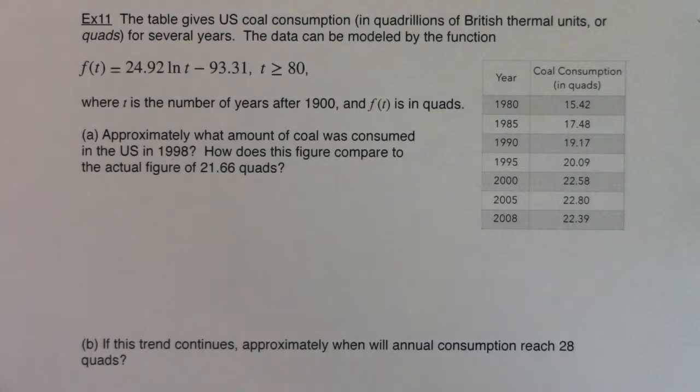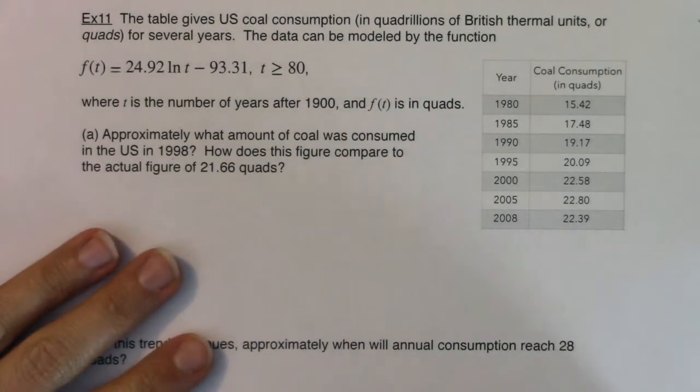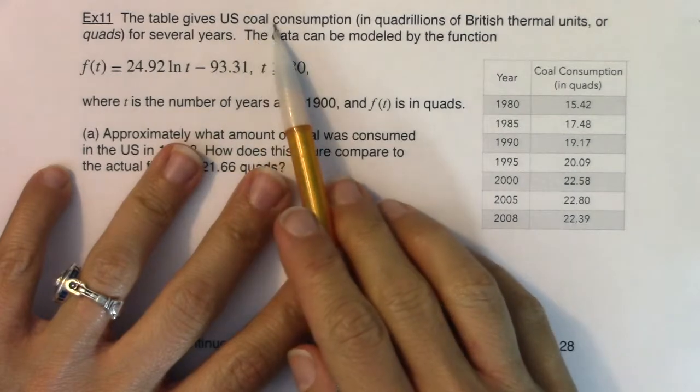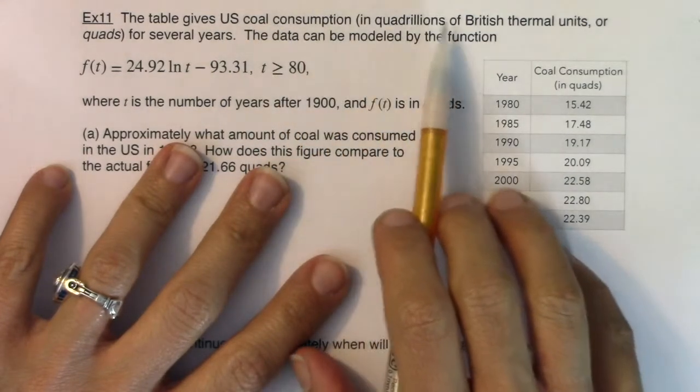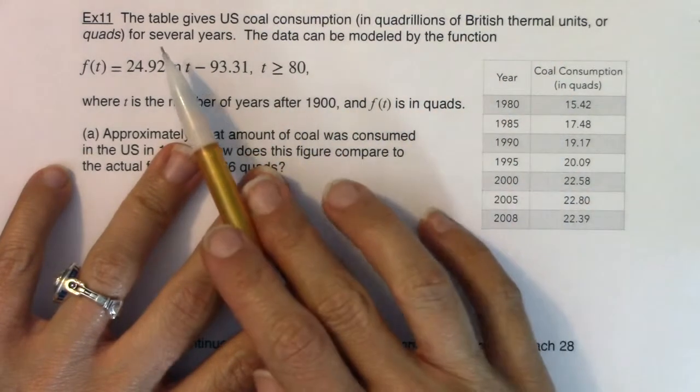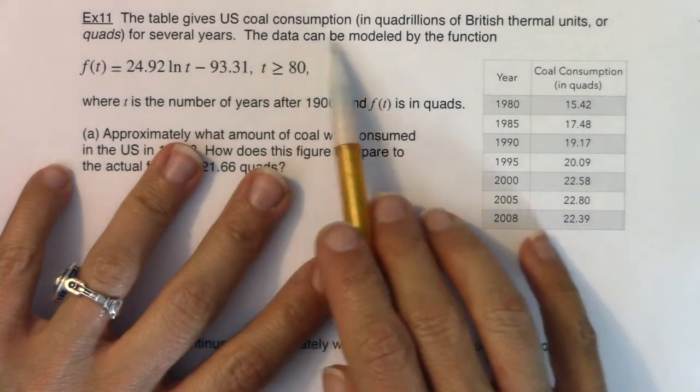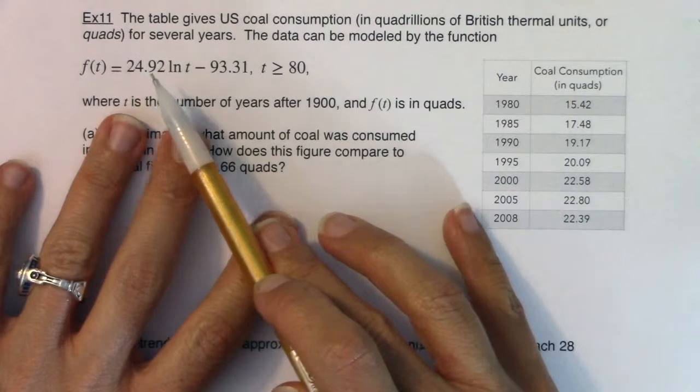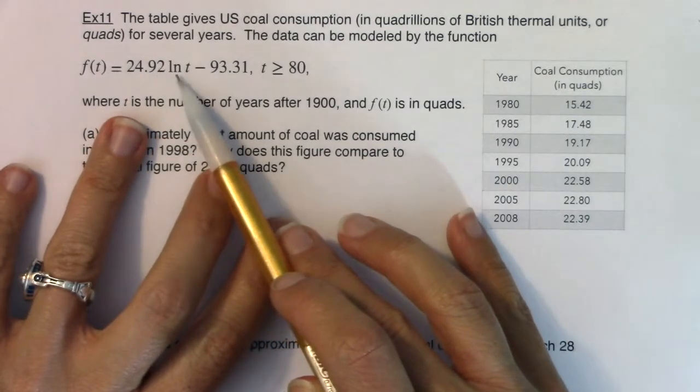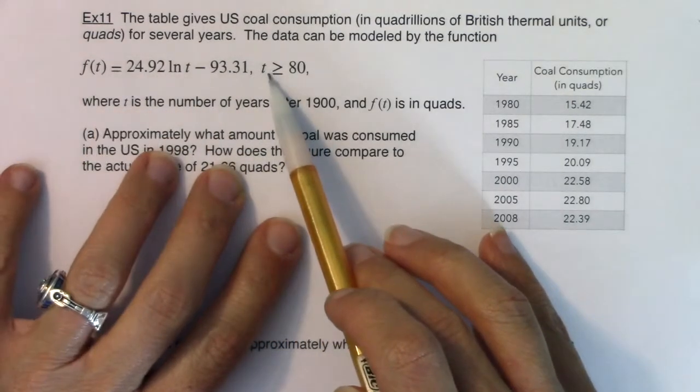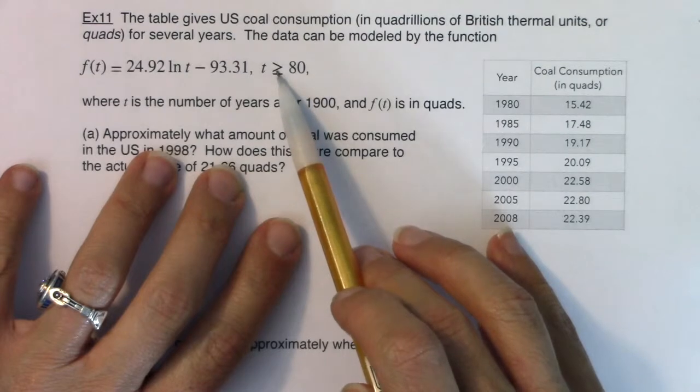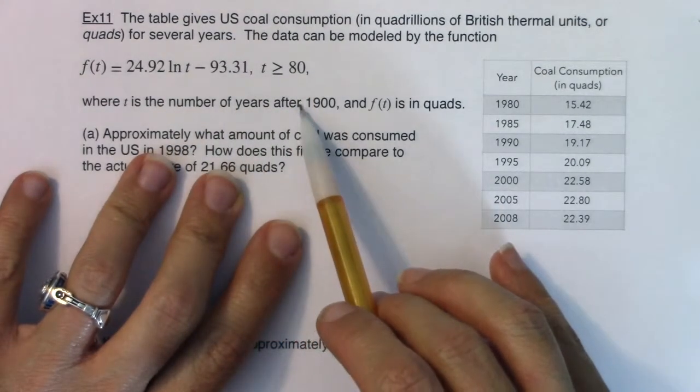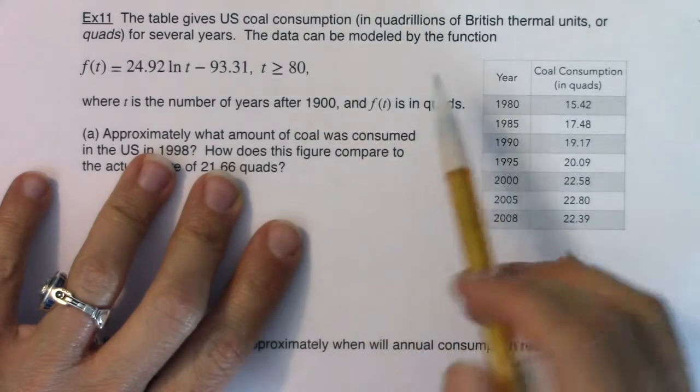Hey Math 31, welcome to Example 11. So let's read through this. It says the table gives U.S. coal consumption in quadrillions of British thermal units or quads for several years. The data can be modeled by this function. So it looks like f(t) equals 24.92 ln(t) minus 93.31 as long as t is greater than or equal to 80.